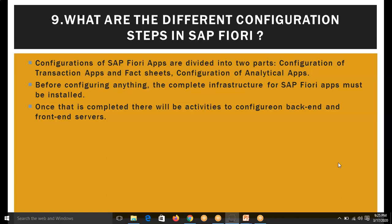What are the different configuration steps in SAP Fiori? Configurations of SAP Fiori apps are divided into two parts: configuration of transactional apps and fact sheets, and configuration of analytical apps. Before configuring anything, the complete infrastructure for SAP Fiori apps must be installed. Once that is completed, there will be activities to configure on both the backend and the frontend servers.